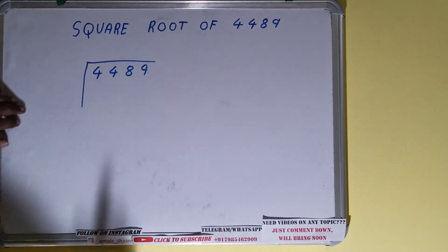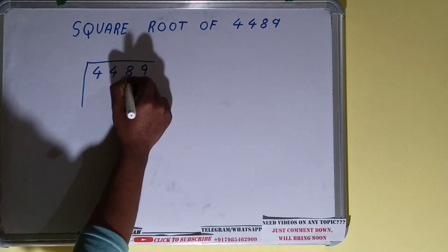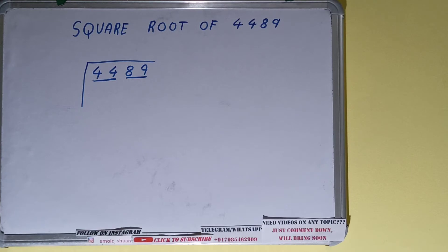Okay, the next thing we need to do is form pairs from the right. So we have got one pair and one more pair.